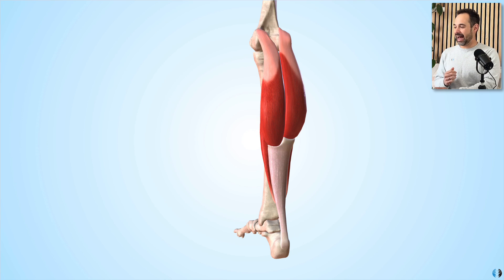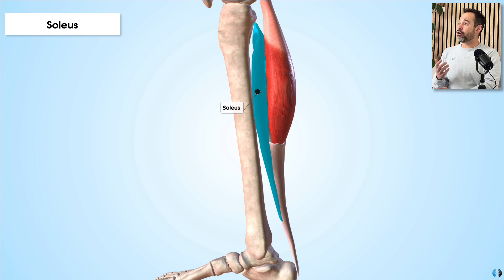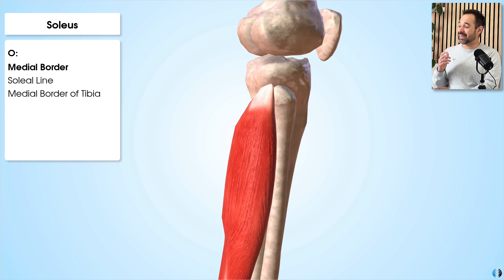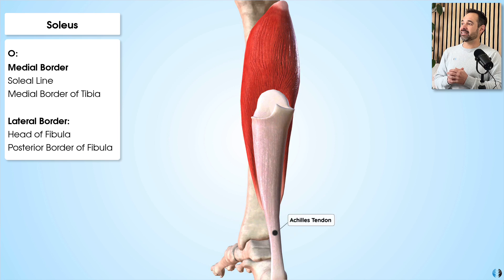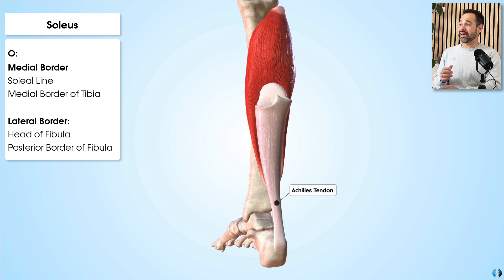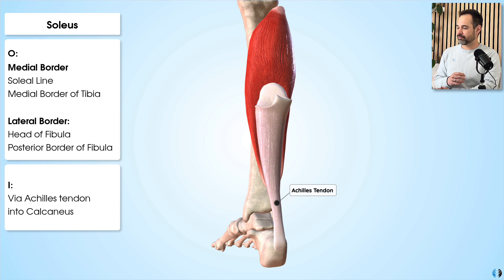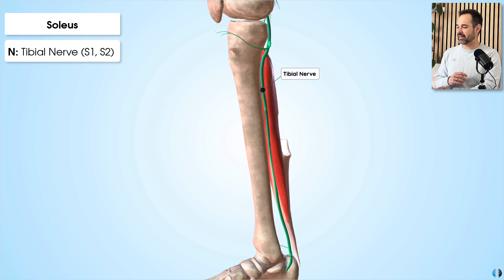Next, let's look at the soleus muscle. This is a deeper, flatter muscle sitting underneath the gastrocnemius. Its origin is from the soleal line of the posterior tibia, as well as the medial border of the tibia, and it also has lateral attachments to the fibular head and the posterior border of the fibula. Like the gastrocnemius, it runs down the posterior leg and inserts into the Achilles tendon and therefore into the calcaneus of the foot. The nerve supply comes from the tibial nerve at S1–S2, just like the gastrocnemius.